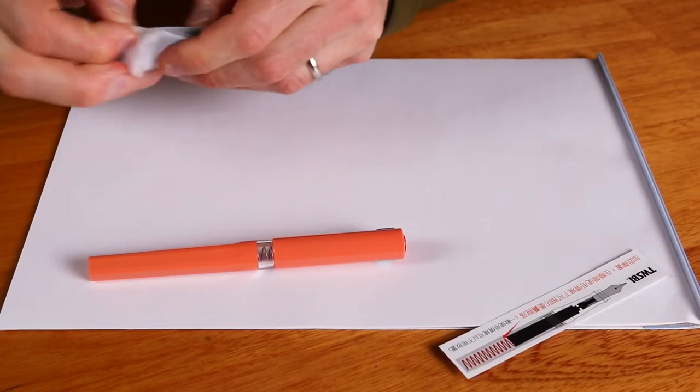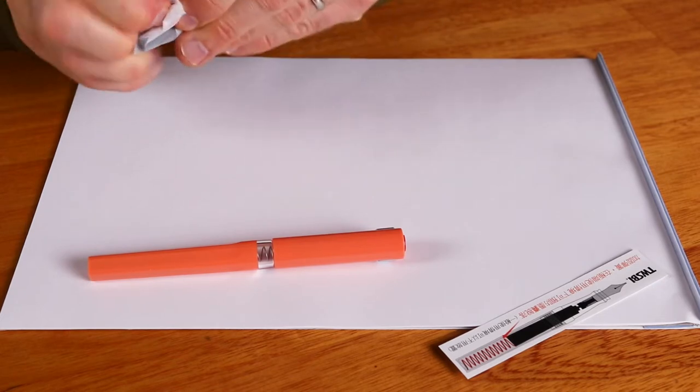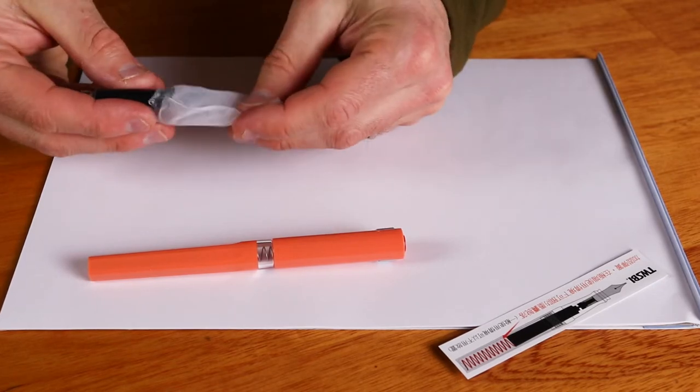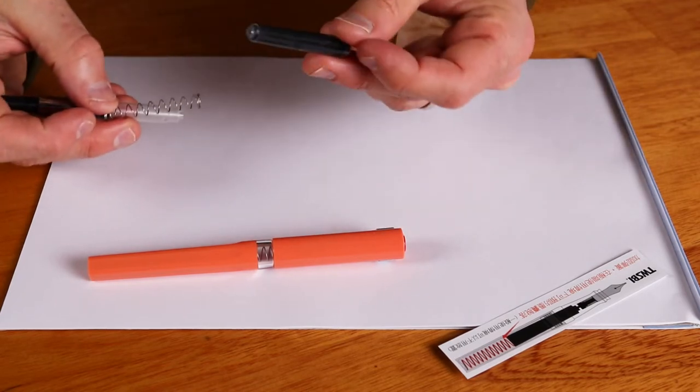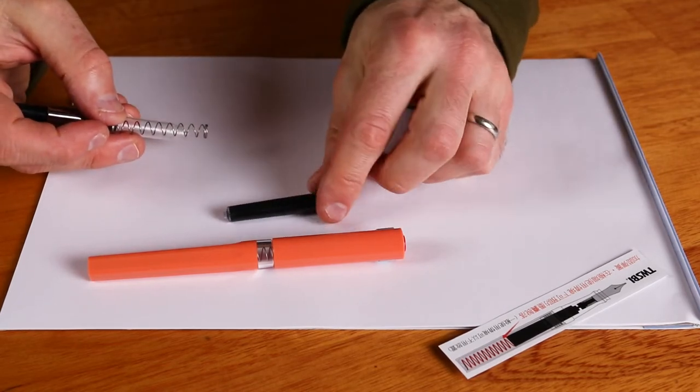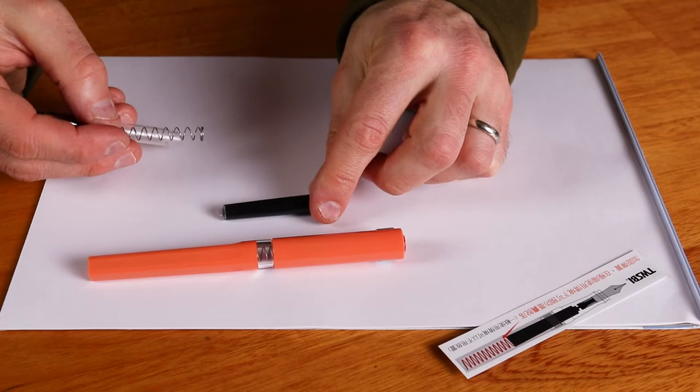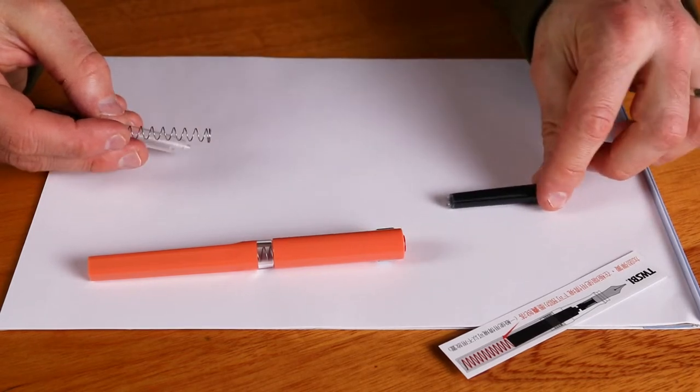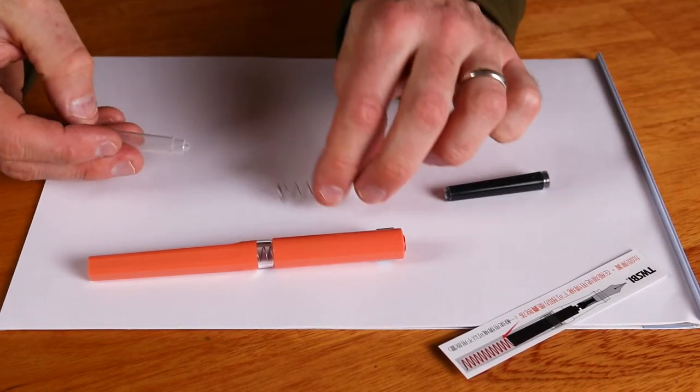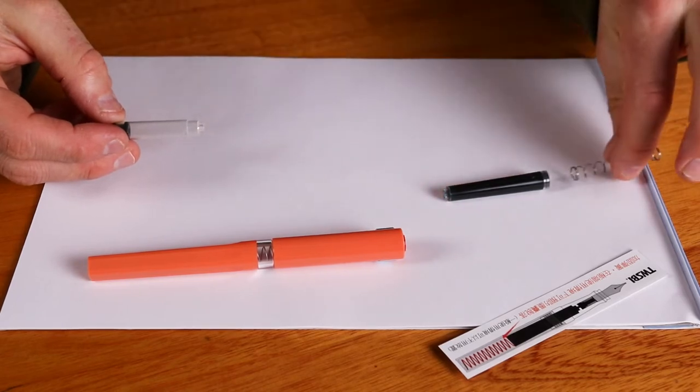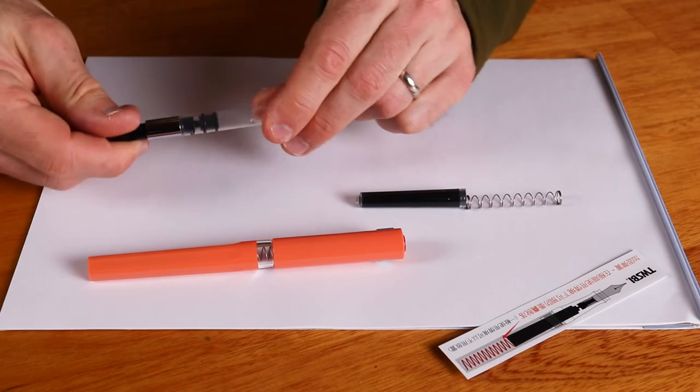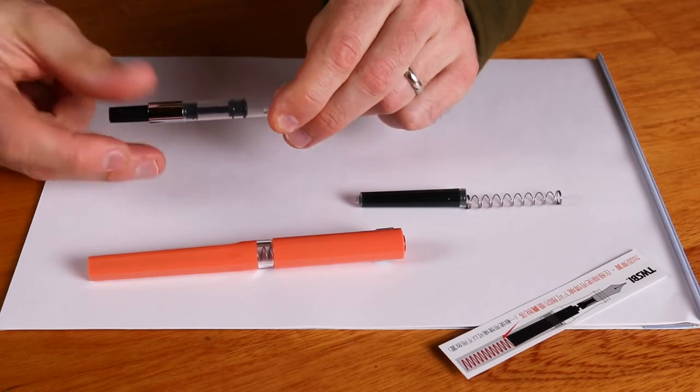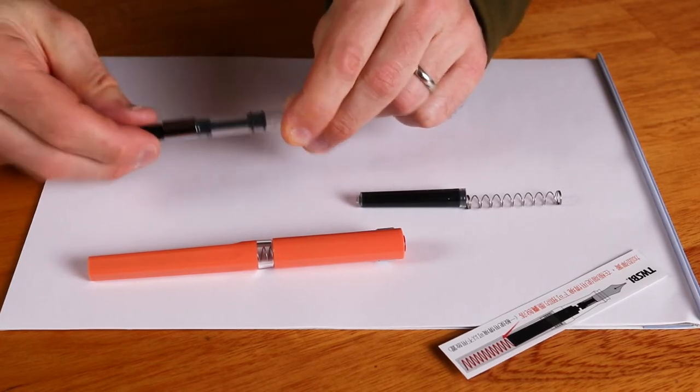Now if I can pull this open. Oops, not that straightforward. In the cellophane package you get one Twisby cartridge. This is an international standard cartridge but it's bigger than regular international standard cartridges and holds more ink. You get a spring which fits into the barrel at the back when you use the cartridge, and you also get this converter which is a twist piston converter.